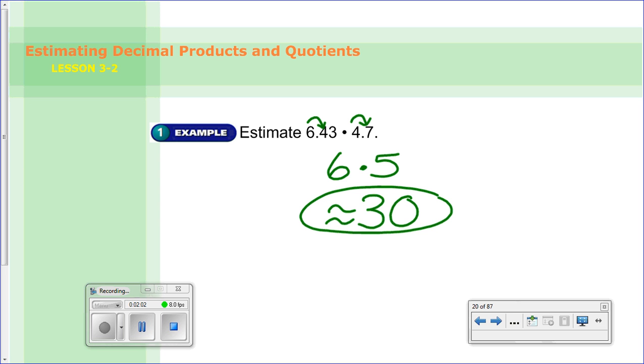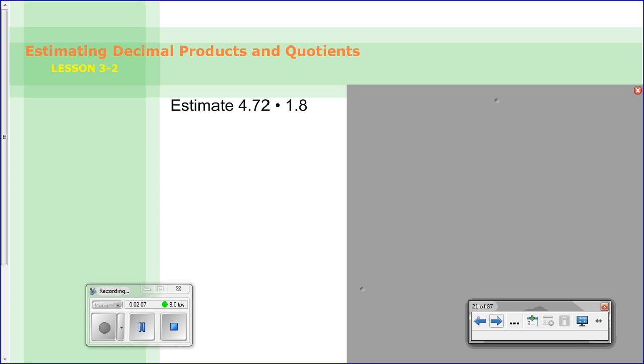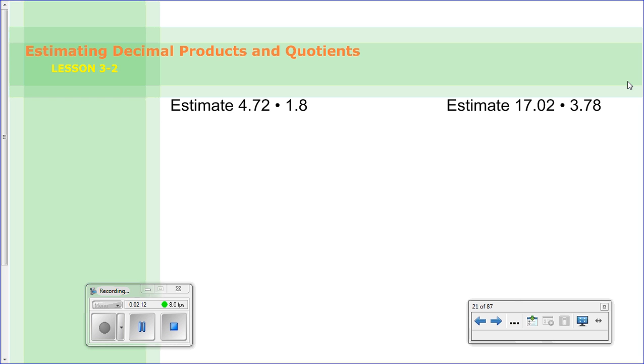And again, I have that squiggly equal sign saying it's about. Go ahead and do problems B and C here. Estimate both of these. So for the first one, estimate 4.72 times 1.8. And for the second one, estimate 17.02 times 3.78. Go ahead and do those, and when you're all done, come back and check them out.